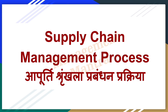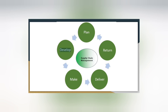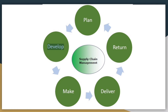Hello everyone, Management Mantra. In this video you will learn supply chain management process. In this process there are five steps: first is plan or planning, second is develop or developing, third is make or making, fourth is deliver or delivering, and fifth is returning.